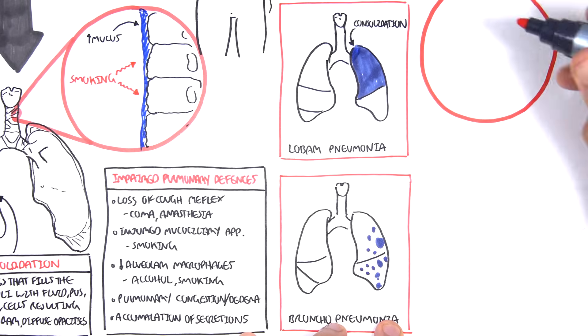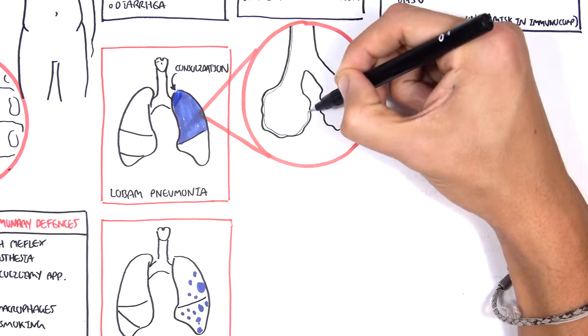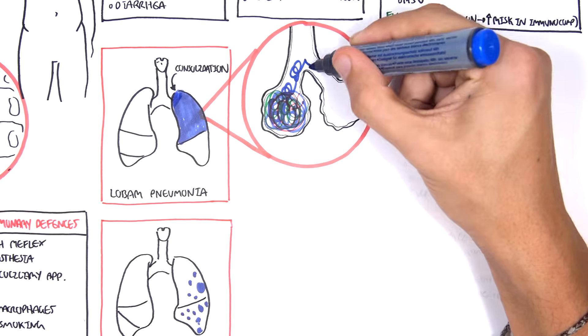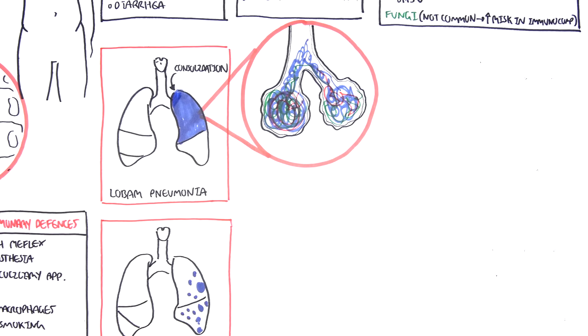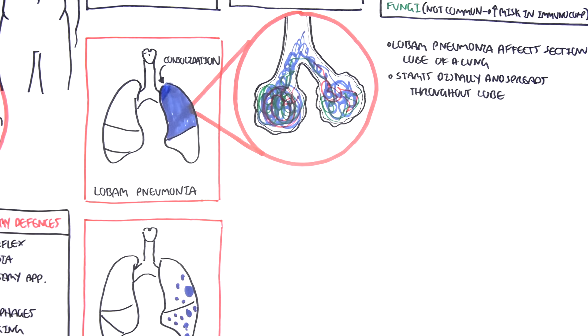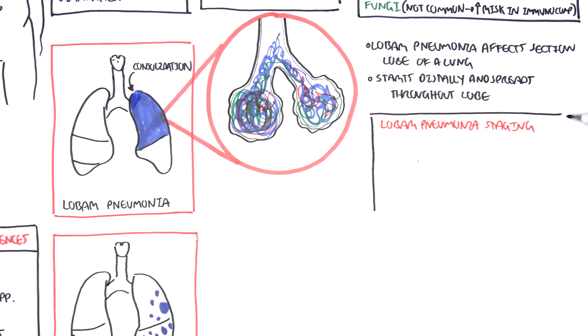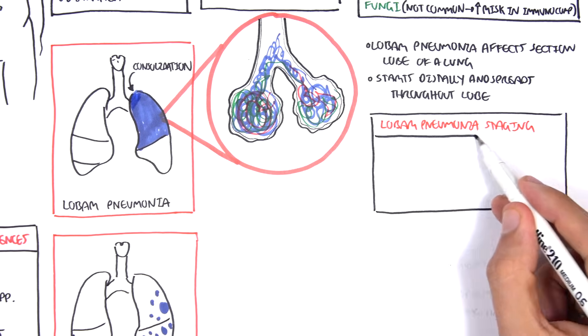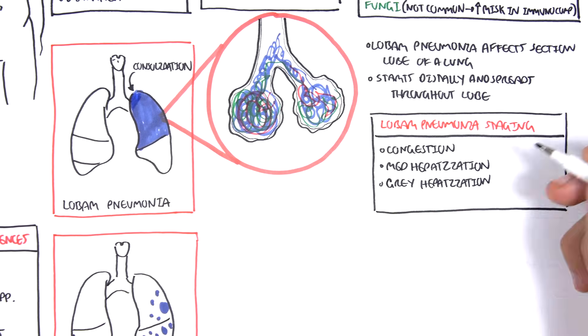Let us look at lobar pneumonia first. So again, if we were to look at the alveoli, we see fluid filled spaces that move from alveoli to alveoli until it occupies the whole lobe essentially. Lobar pneumonia affects a section of the lobe of the lung. It starts distally and spreads throughout the lobe of the lung. There is a staging for lobar pneumonia and it can be divided into four stages: first is congestion, red hepatization, grey hepatization, and resolution. So congestion is congestion. Red hepatization is a red liver type appearance. Grey is a grey type appearance in pathological terms. And then resolution is just it resolves.